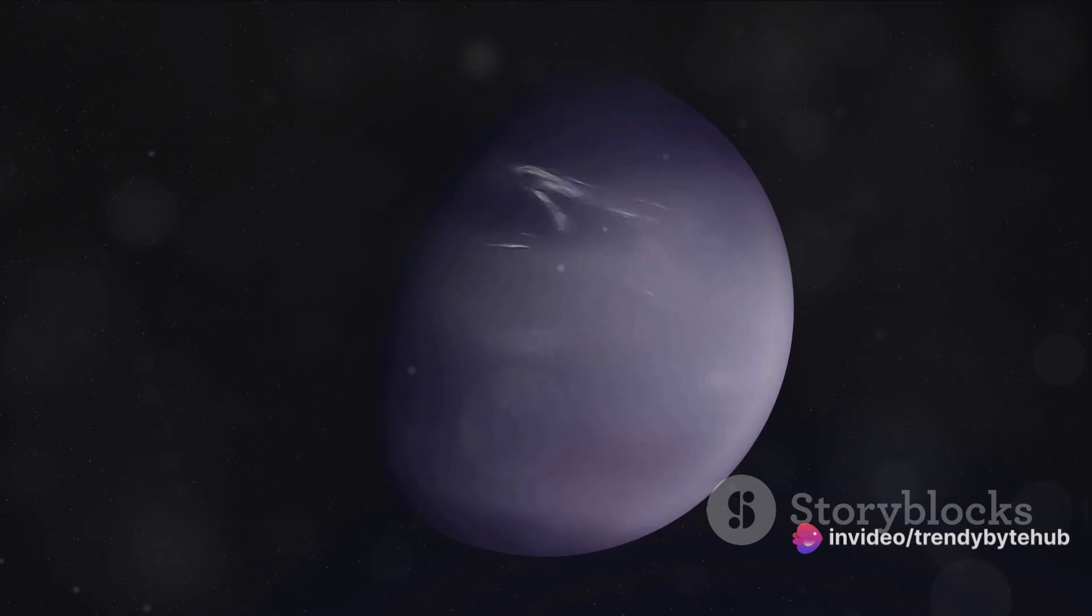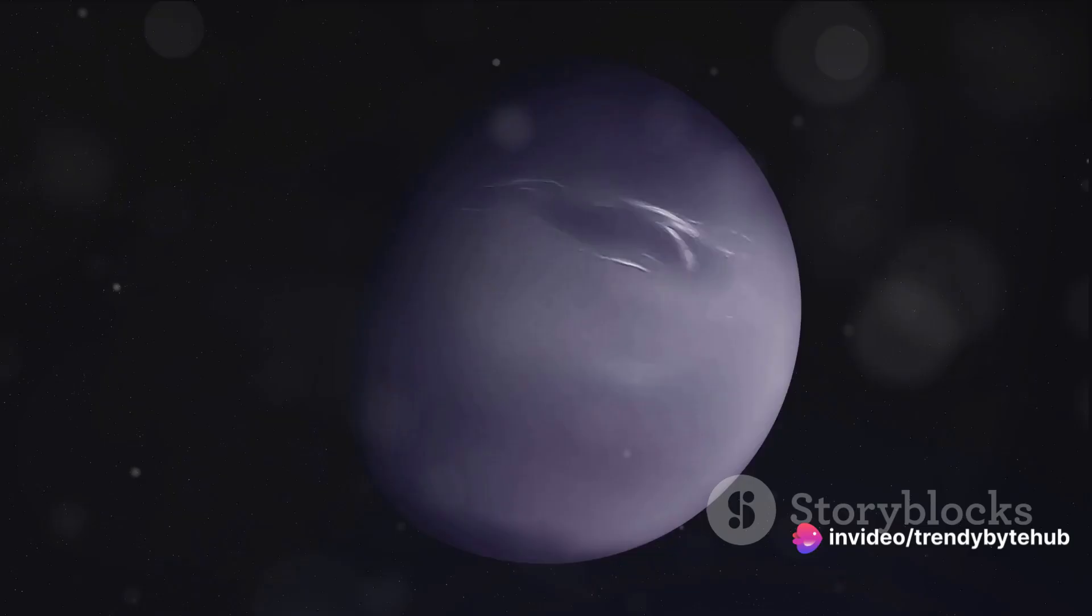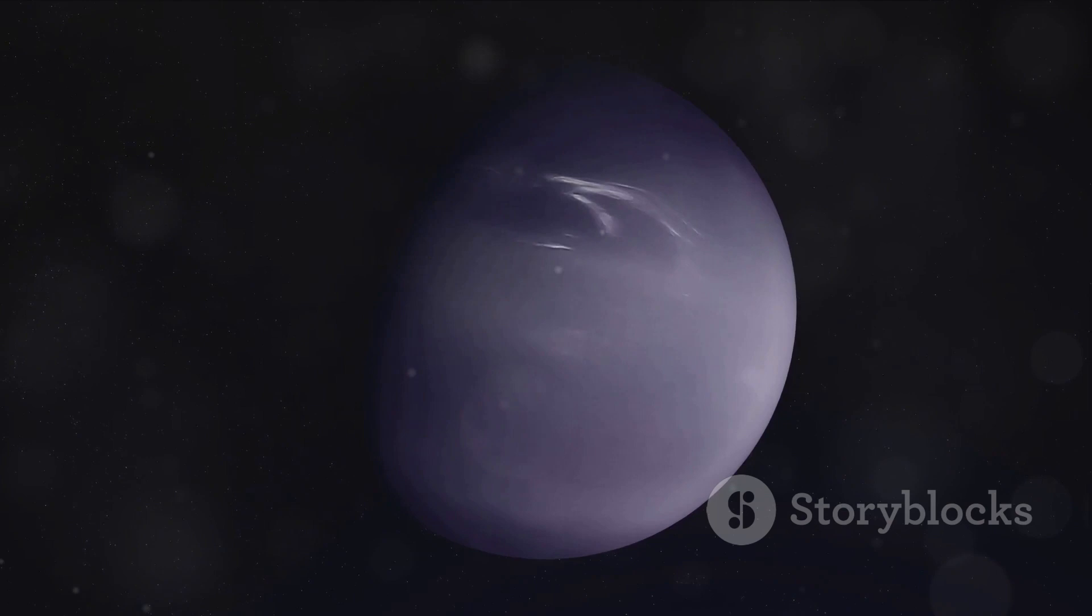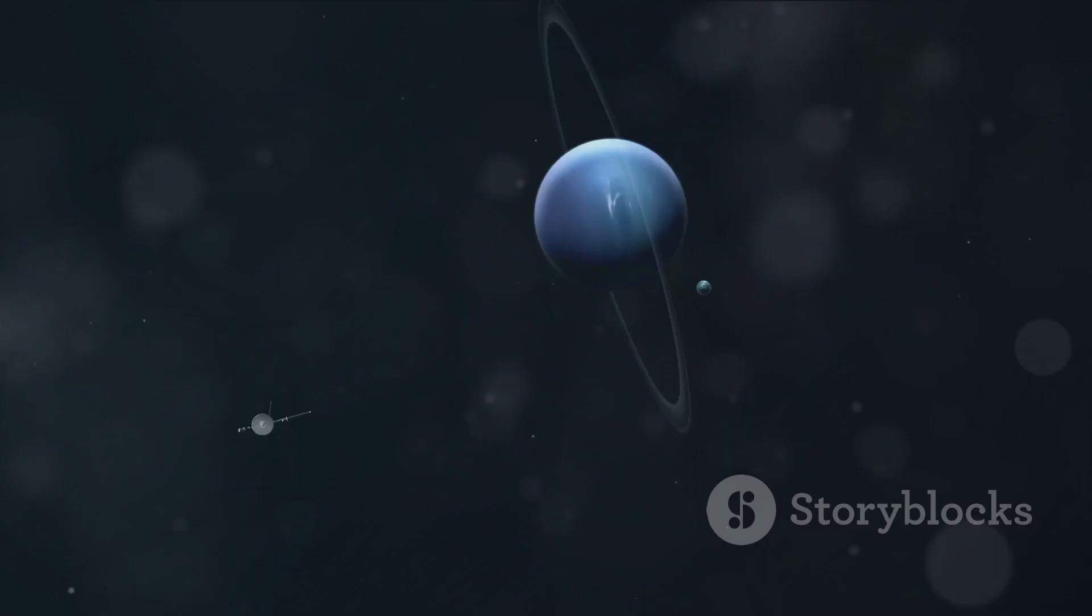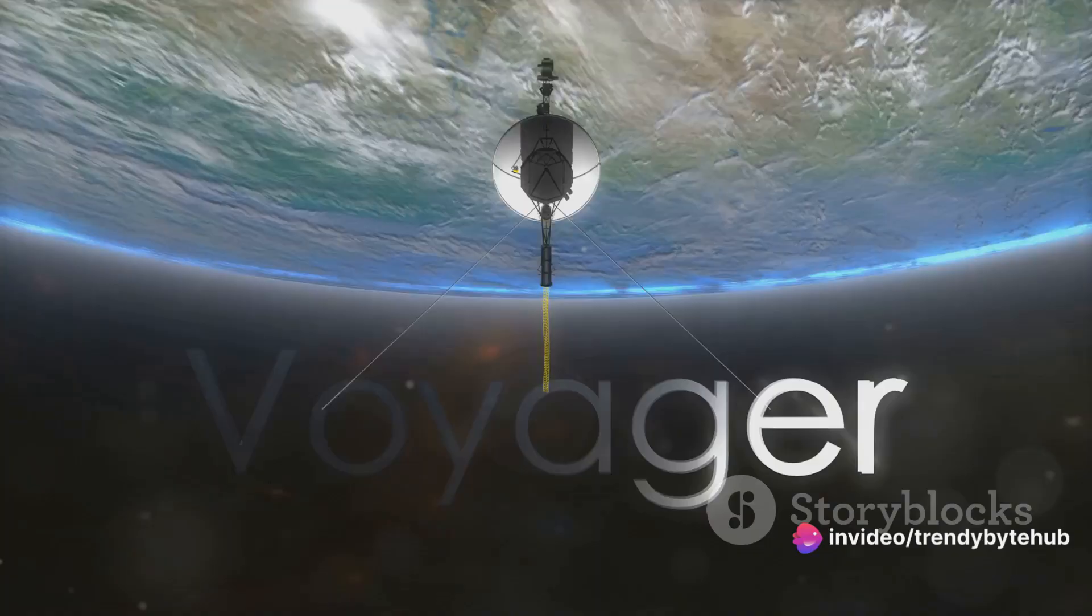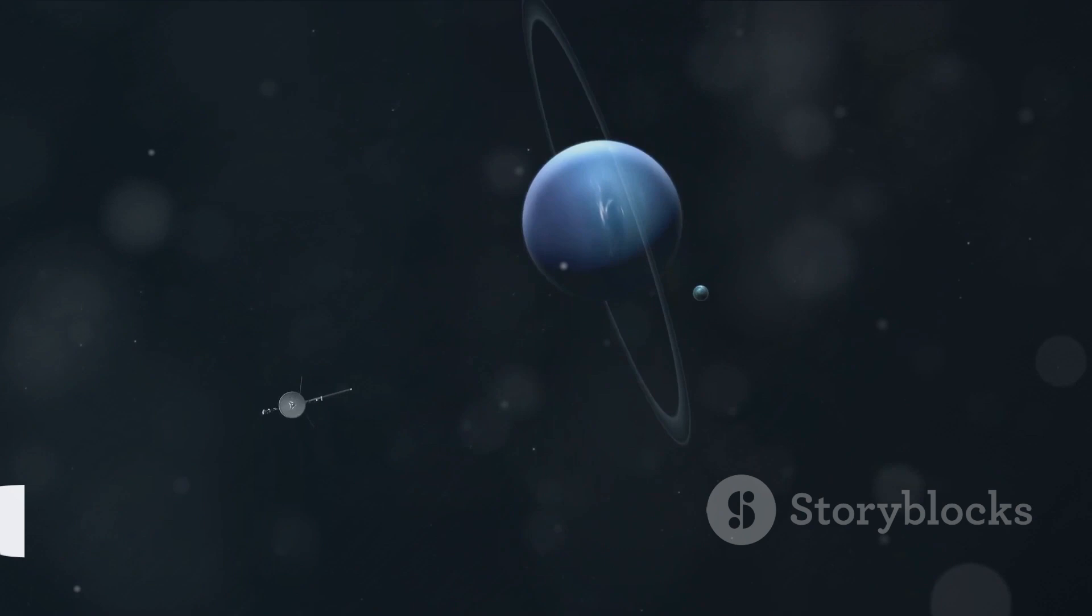In the grand scheme of things, Voyager 2's mission was brief. Yet, it transformed our understanding of Neptune in ways we could not have predicted. It showed us that Neptune was not just a distant icy orb, but a world teeming with dynamic weather, complex rings, and a strong magnetic field. Voyager 2 left us with more questions than answers, but it was just the beginning of our journey of understanding Neptune. As we continue to peer into the depths of space, we carry with us the legacy of Voyager 2, a symbol of human curiosity and our relentless pursuit of knowledge.